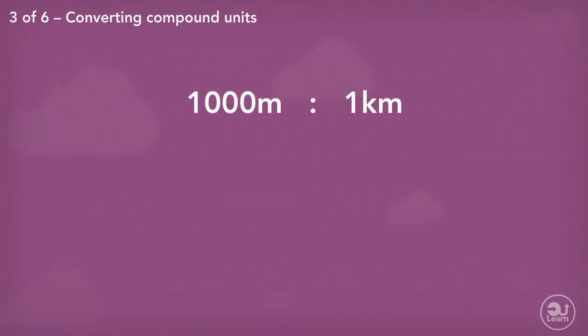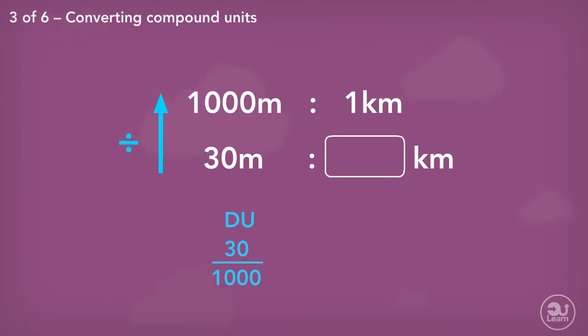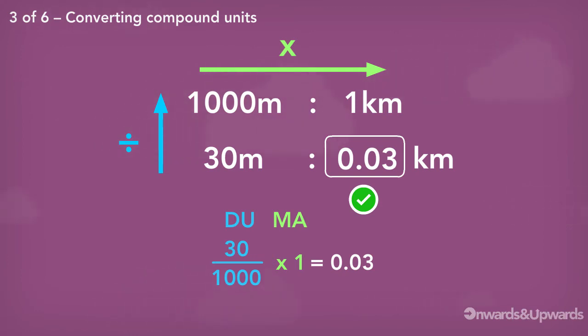Using the relationship 1,000 meters to 1 kilometer, we can convert 30 meters to kilometers using our divide up multiply across technique, our Duma technique. Divide upwards, 30 by 1,000, multiply across by 1. The answer is 0.03 kilometers. Therefore, 30 meters is equivalent to 0.03 kilometers.